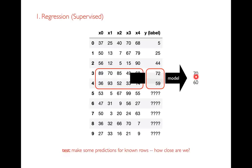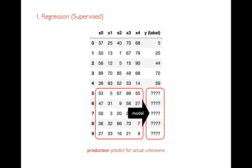For example, if my model says a row should have been 70 and it's actually 72, that's an error. I can quantify all these errors and give my model some sort of score. After I've learned my model and evaluated it on some known cases, I might actually put it into production — meaning I'm using it for real things, trying to predict actual unknowns in the world, like if I add a new house to the market, what might it sell for.